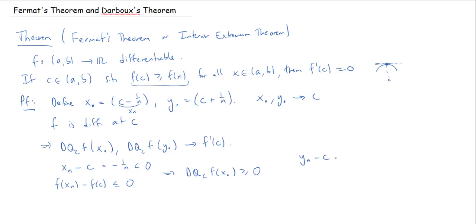Now for the y_n sequence: y_n − C = 1/n > 0. And f(y_n) − f(C) ≤ 0 since f(C) is the maximum. So the difference quotient applied to y_n is a non-positive number divided by a positive number, which means the difference quotient applied to y_n is less than or equal to zero.